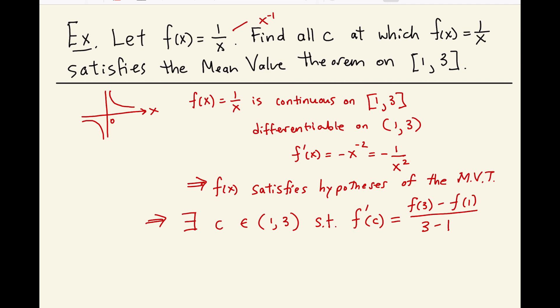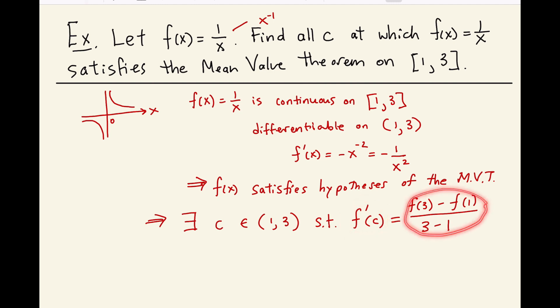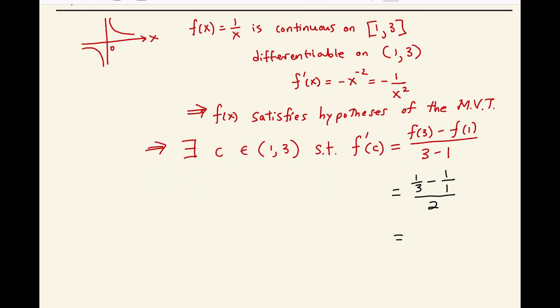Our job is to find all values of c satisfying this condition — meaning the slope of the tangent line at c equals the slope of the secant line. Let me calculate: f(3) is 1 over 3, and f(1) is 1 over 1, and 3 minus 1 is 2. So on the right-hand side we have (1/3 minus 1) over 2, which is negative 2/3 divided by 2, equal to negative 2/3 times 1/2, which is negative 1/3.